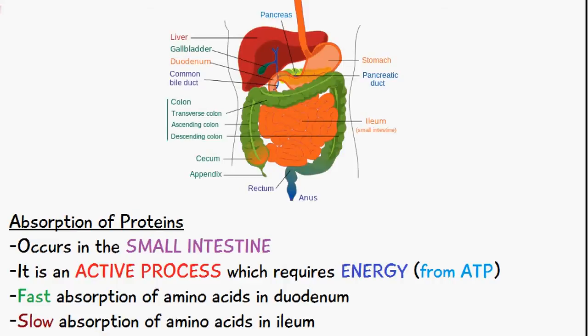It occurs in the small intestine and it's an active process which requires energy in the form of ATP. Fast absorption of amino acids occurs in the duodenum which is this region here, and slow absorption of amino acids occurs in the ileum which is this region here.